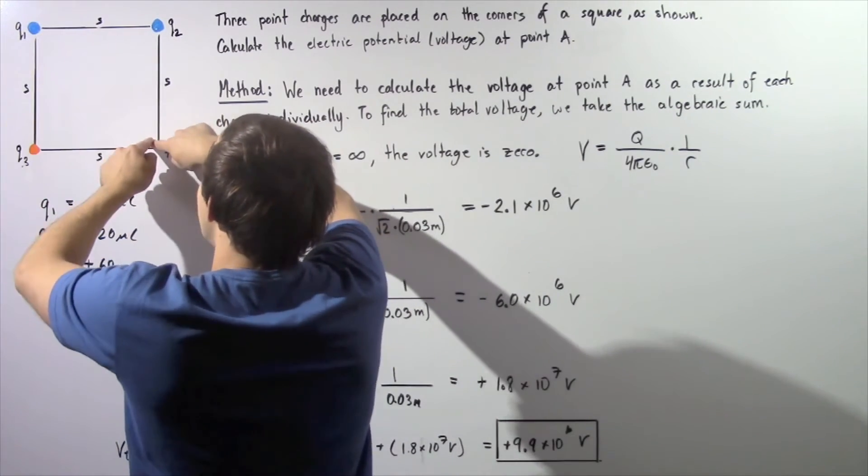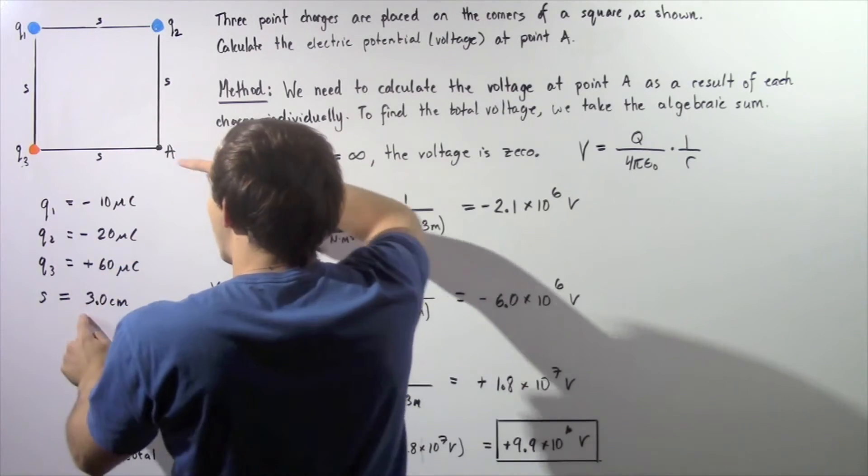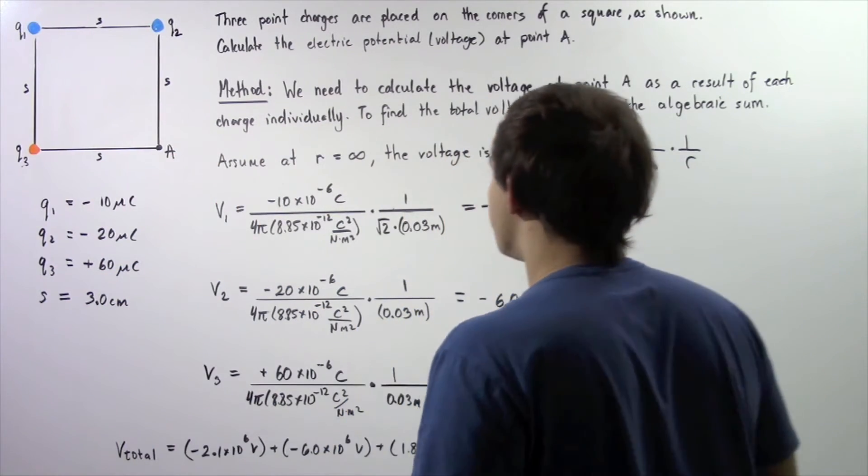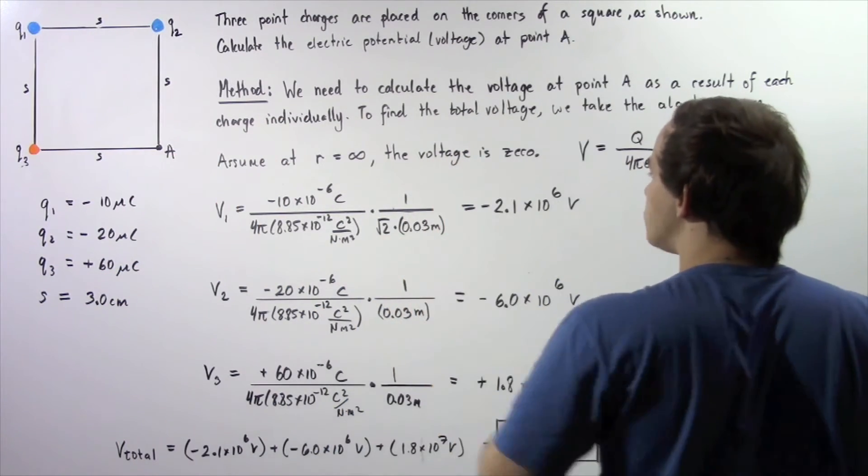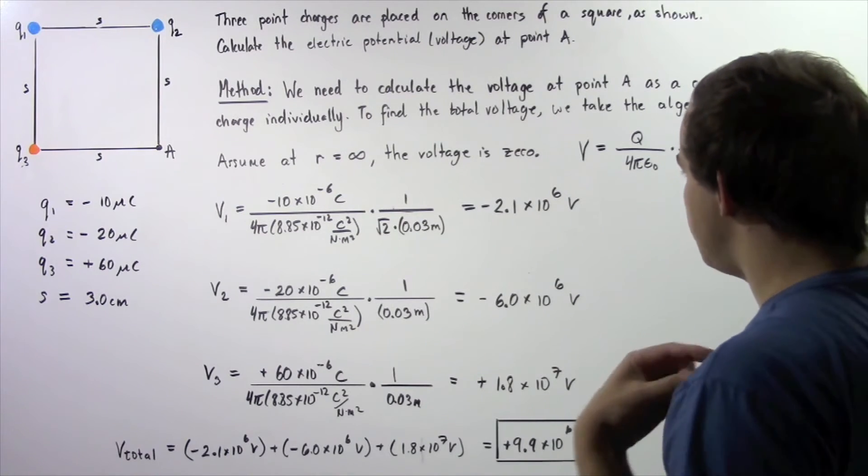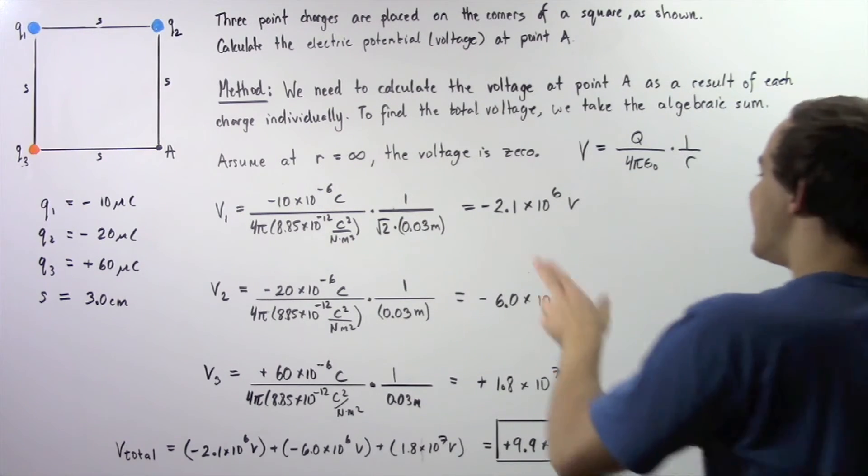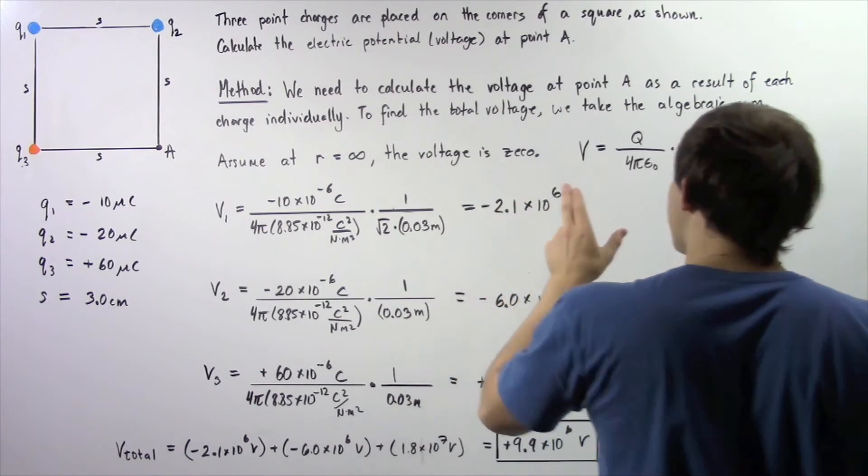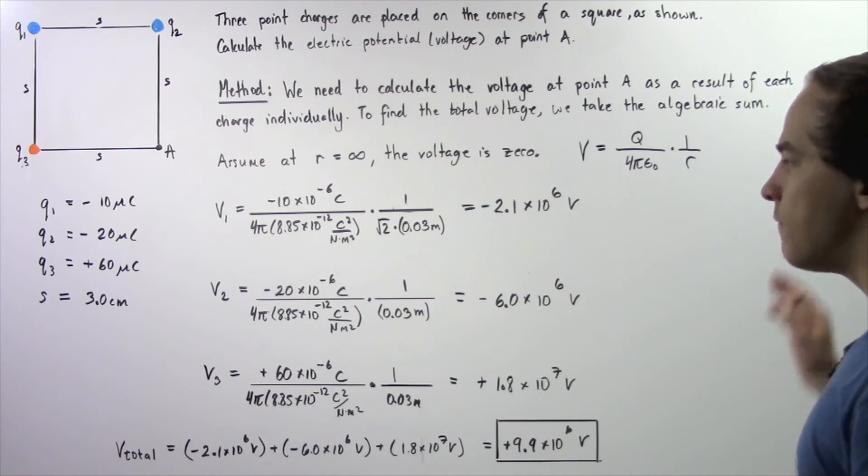We multiply by 1 divided by the distance. This distance is square root of 2 multiplied by S, which is 0.03 meters. Square root 2 multiplied by 0.03 meters, and that gives us about negative 2.1 times 10 to the 6 volts.